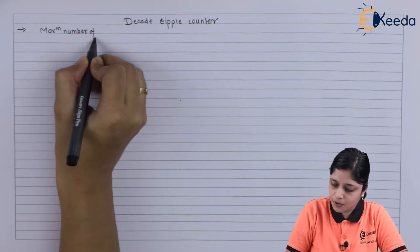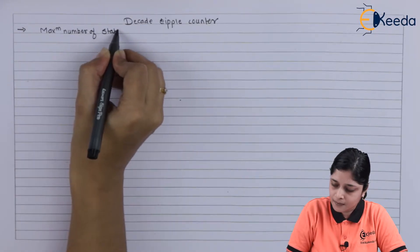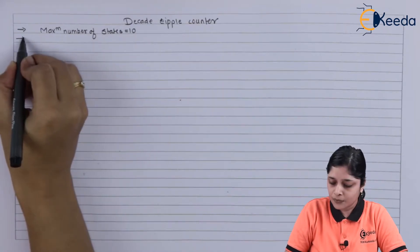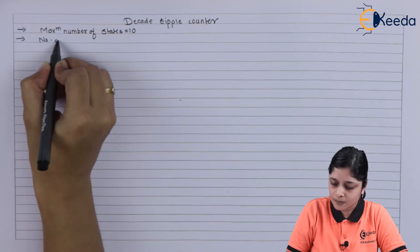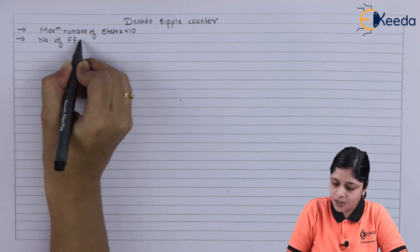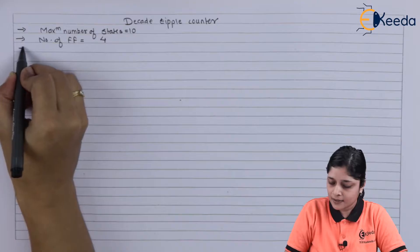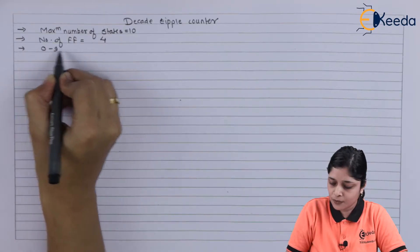Maximum number of states equals to 10. Number of flip flops used here is 4. And 0 to 9 you have to count.